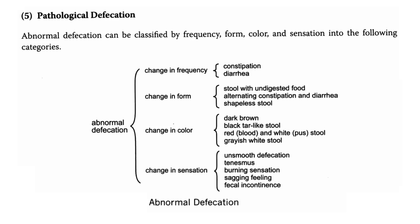In abnormal defecation, there can be changes in frequency — constipation and diarrhea. The change in form: stool could contain undigested food, alternating constipation and diarrhea, and a shapeless stool. If there is change in color, we can see dark brown, black tar-like stool, red if there is blood, white if there is pus in the stool, or grayish-white stool.